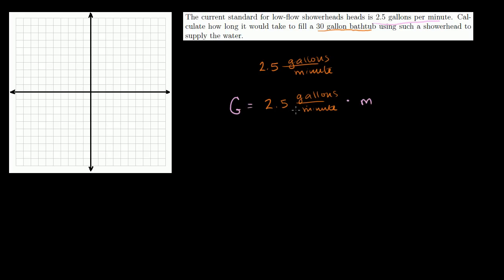So this is our model. And this is also a line. Remember, the form of a line is y equals mx plus b. Here, we have no b. The b is gone. We just have an m times x. The x, now we're calling minutes. And the y, we're now calling gallons. And the slope is now 2.5. So let's plot this before I even answer their question.